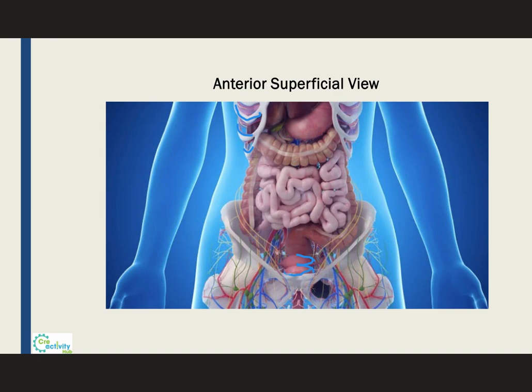The urinary bladder can also just be called the bladder, but the gallbladder is always called the gallbladder. Continuing from the stomach, we enter the small intestine, which is divided into three compartments. The first and smallest is the duodenum, which we can barely see right over here.